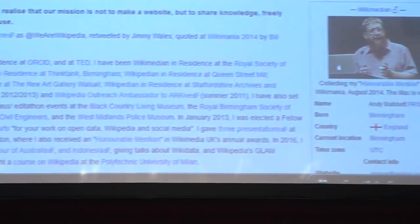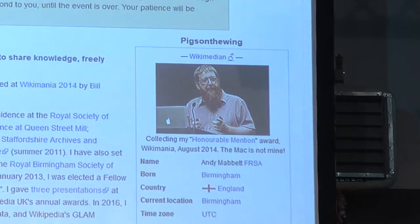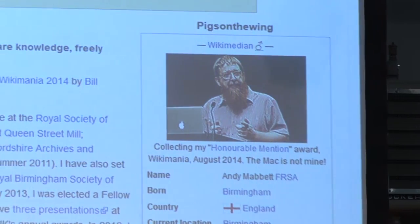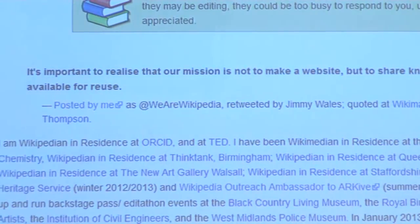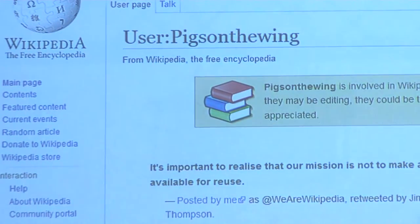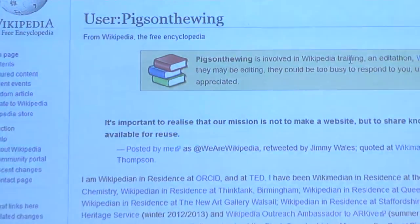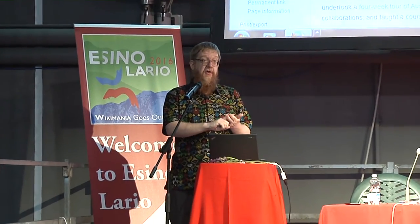When you have an account, you have a profile page about you where people can leave you messages — and this is also where you can say 'I'm a paid editor' or 'I work for AC Milan so all my edits are paid.' The third place is when you make an edit and save it, you leave a little summary saying what you did — 'I added the name of the new goalkeeper for AC Milan,' or 'I changed the name of the mayor of Essinolario — and I was paid to make this edit.' You can do it in one, two, or all three of those places, but you must do it in at least one.